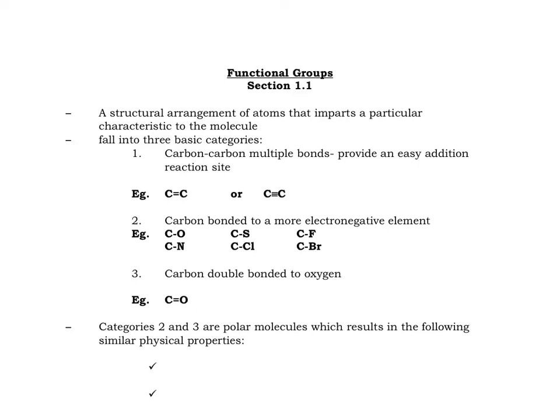Functional groups fall into three basic categories. We have carbon-carbon multiple bonds, which really doesn't seem like it should be a functional group, but the extra electrons in the double bonds and triple bonds are good reaction sites. We'll explore these more later when we're discussing reactions.